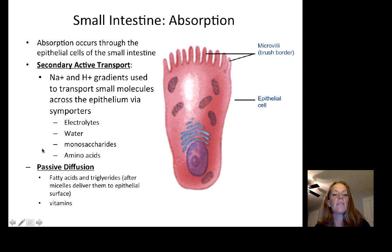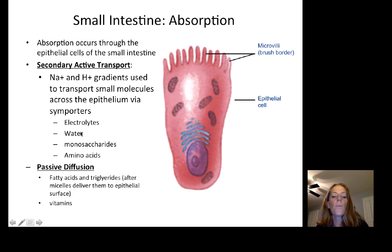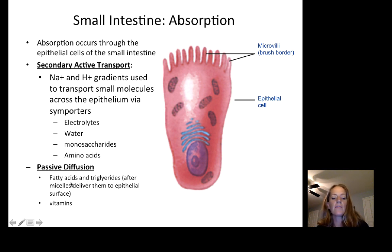Absorption occurs through epithelial cells of the small intestine, generally via secondary active transport using sodium and hydrogen ion gradients. This brings electrolytes, water, monosaccharides, and amino acids across the epithelium into cells. Lipids — fatty acids and triglycerides delivered by micelles — and fat-soluble vitamins use passive diffusion to cross the epithelial membrane.